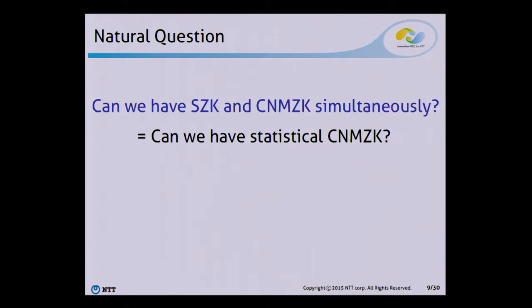Since both statistical zero-knowledge and concurrent non-malleable zero-knowledge are useful, strong security notions, a natural question to ask is whether we can have both simultaneously — in other words, whether we can have statistical concurrent non-malleable zero-knowledge. Statistical concurrent non-malleable zero-knowledge provides security in the concurrent setting in a very strong sense, so it's good if we can achieve this security notion.